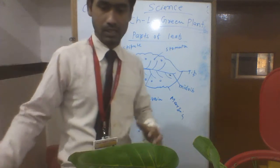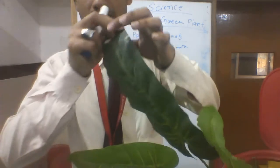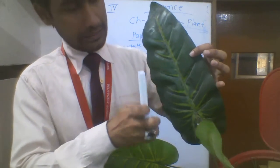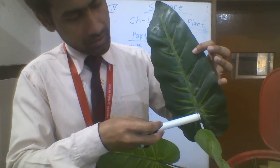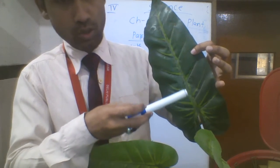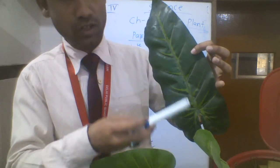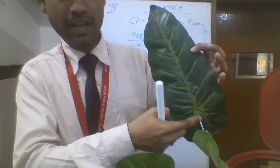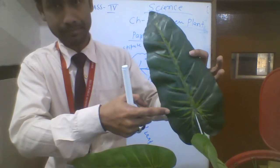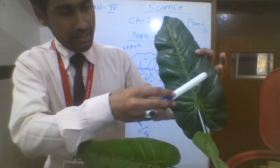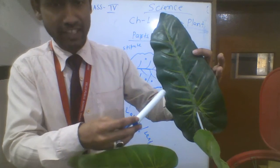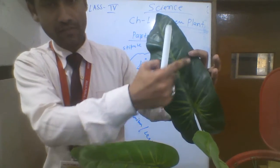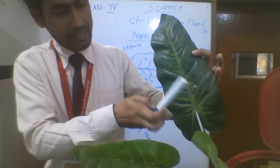I have some leaves here. The deep line which runs through the center of the leaf is called the mid rib. These lines on the sides are also called veins — there is a central vein and side veins.